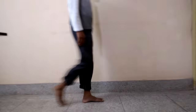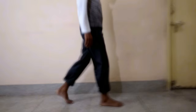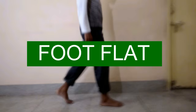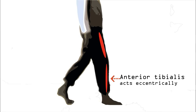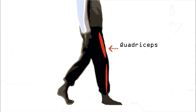After heel strike, the next component is foot flat. In this phase, for the first time, the foot directly comes in contact with the floor and remains flat. The anterior tibialis continues to act eccentrically. The quadriceps and gluteus muscles also act eccentrically.